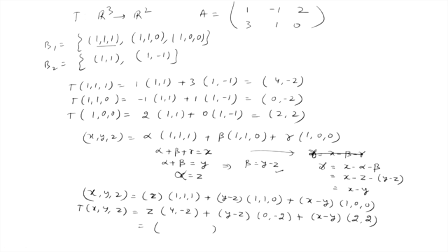Then T(x,y,z) = z·T(1,1,1) + (y−z)·T(1,1,0) + (x−y)·T(1,0,0) = z·(4,−2) + (y−z)·(0,−2) + (x−y)·(2,2). You can simplify this to find the corresponding linear map from R³ to R² with respect to bases B1 and B2.